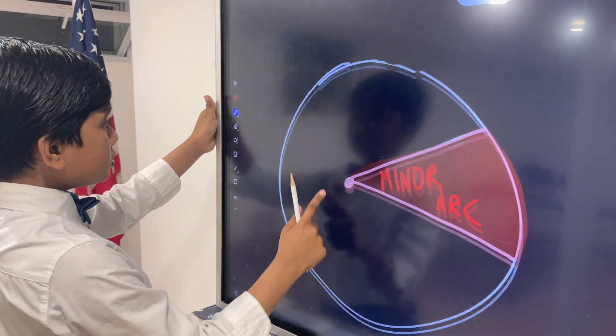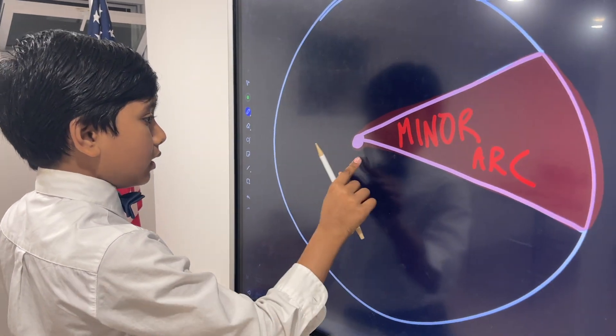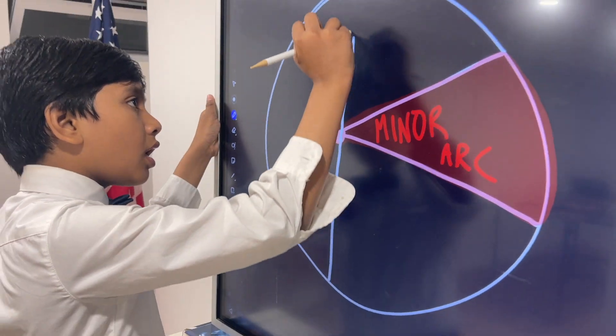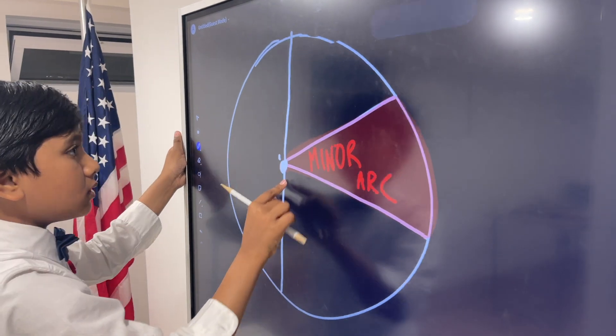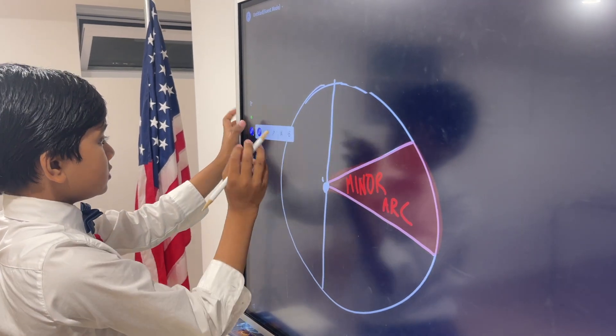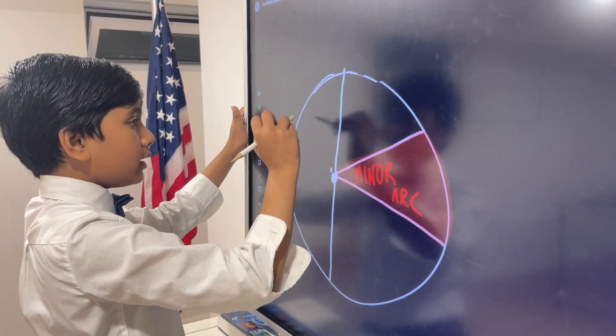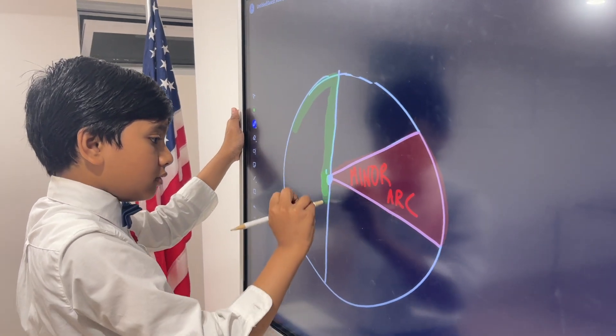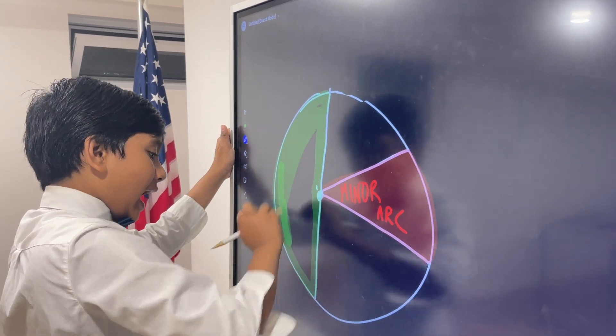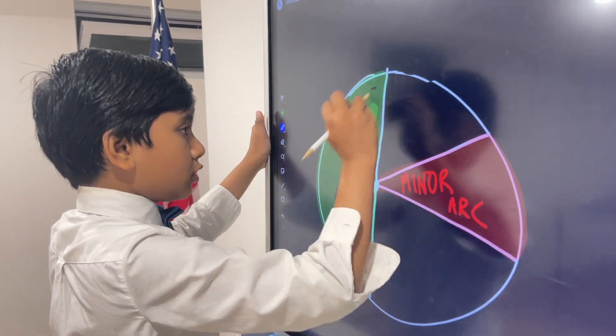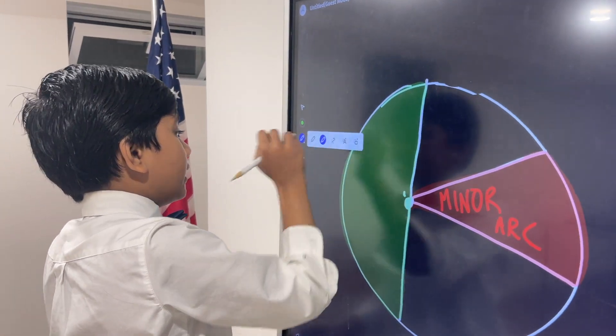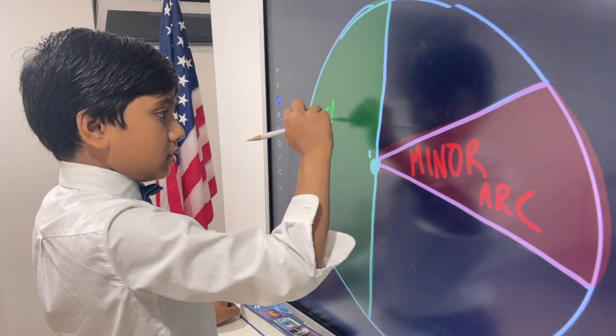There's also a type called the semi-circle. The semi-circle looks like this. Let's do that and do that. As I fill it in, this is the semi-circle, which is exactly half of a circle. Here is the semi-circle.